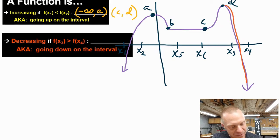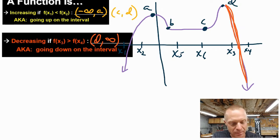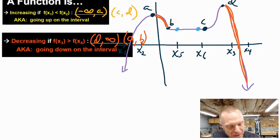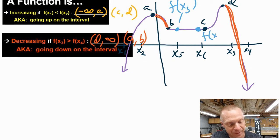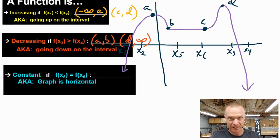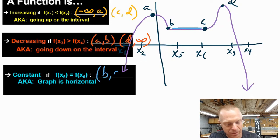That's happening everywhere in this interval — everywhere from d to infinity we see that the function is decreasing. That's also happening between a and b, which is another interval where the function is decreasing. Now there's one more space we want to look at: the space in the middle. The y value that goes with x sub 5 we call f of x sub 5, and the y value that goes with x sub 6 we call f of x sub 6. These y values are equal, and when y values are equal on an interval we say the function is constant — it is constant everywhere between b and c.